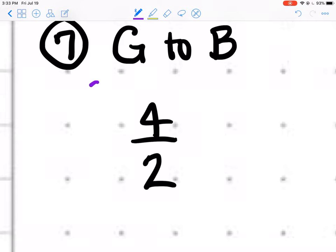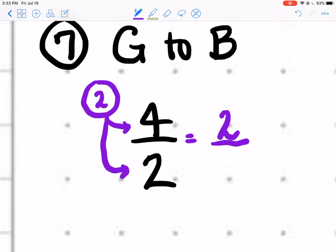A 4 and a 2. I'm going to use a 2 to break this one down. 2 into 4 goes 2 times and 2 into 2 goes 1. So the equivalent lower term is 2 to 1.